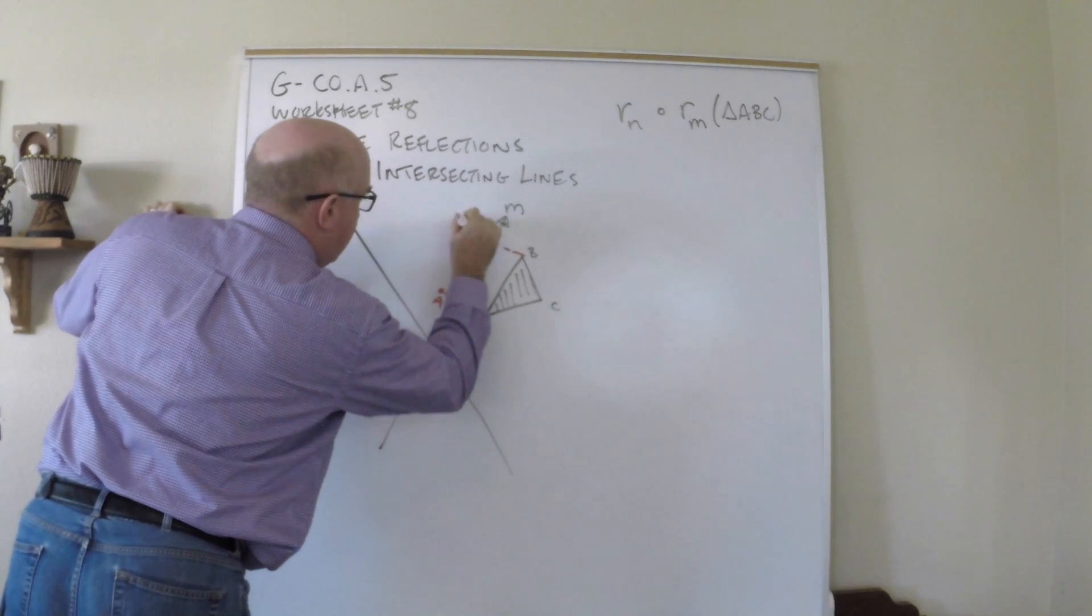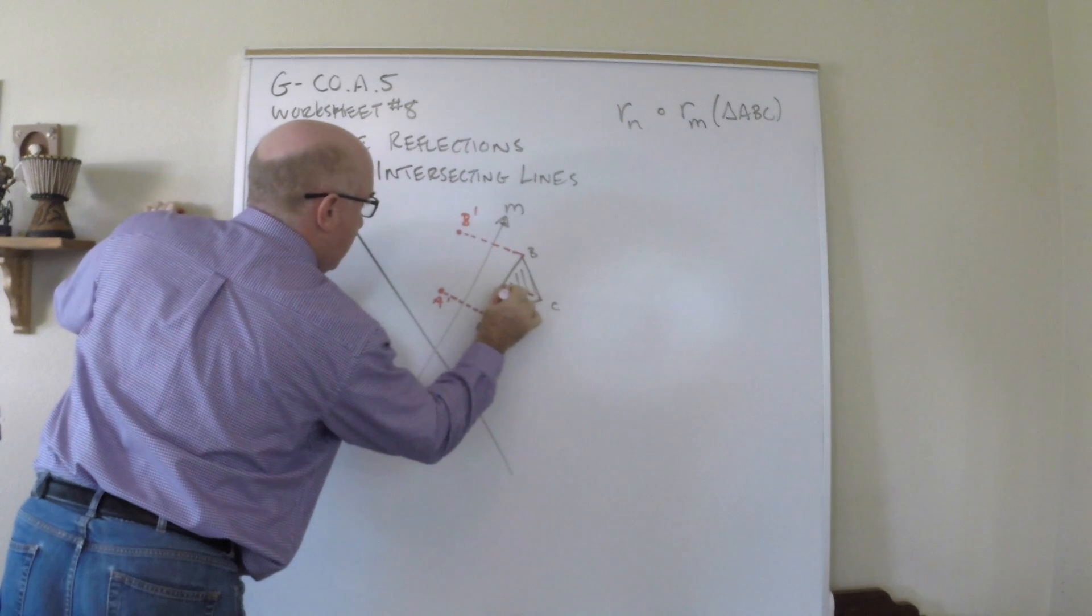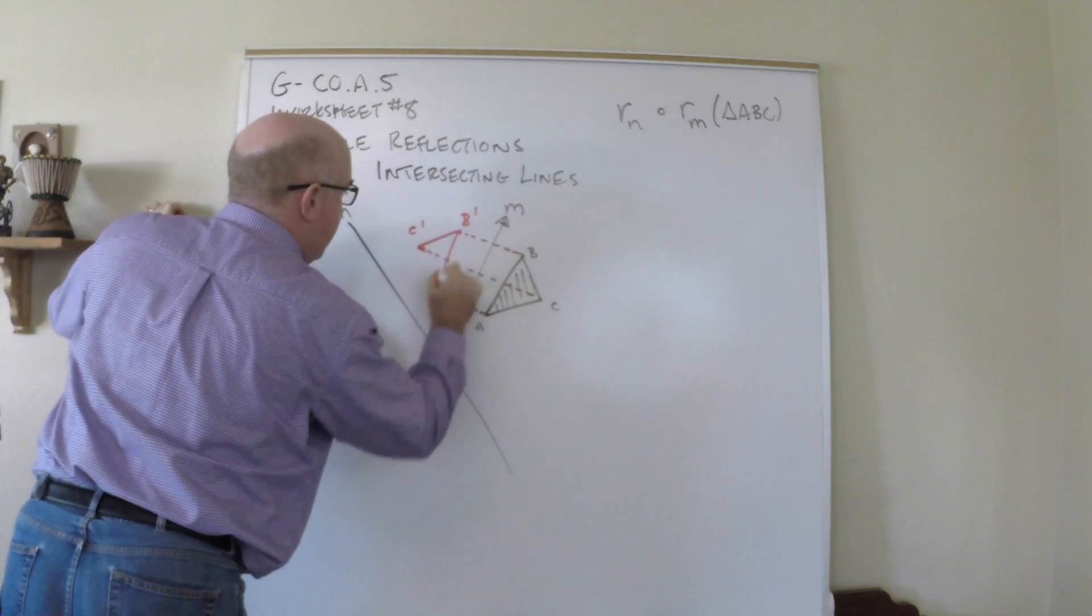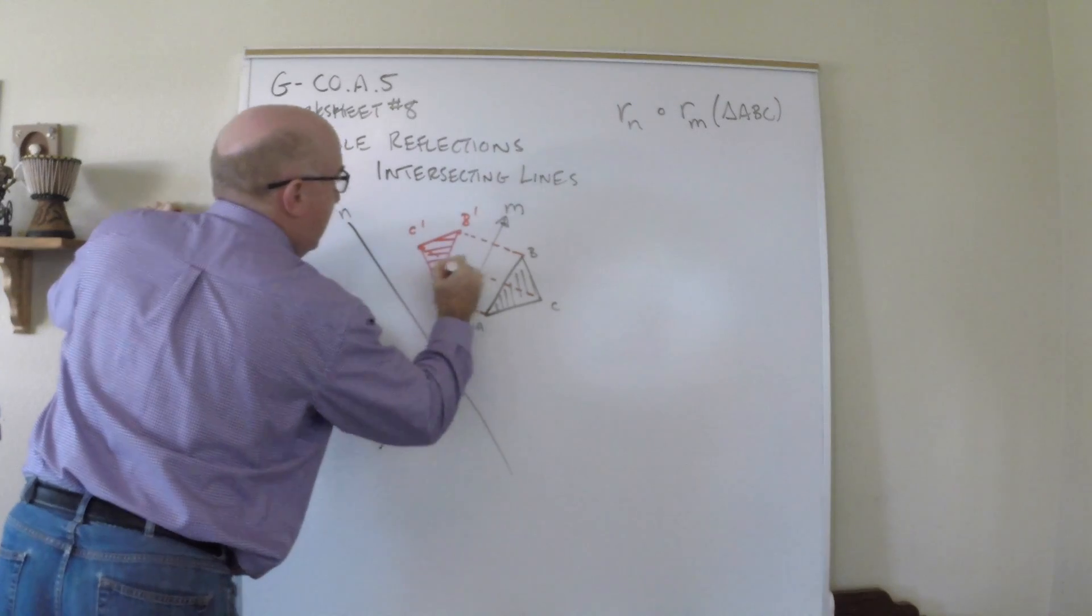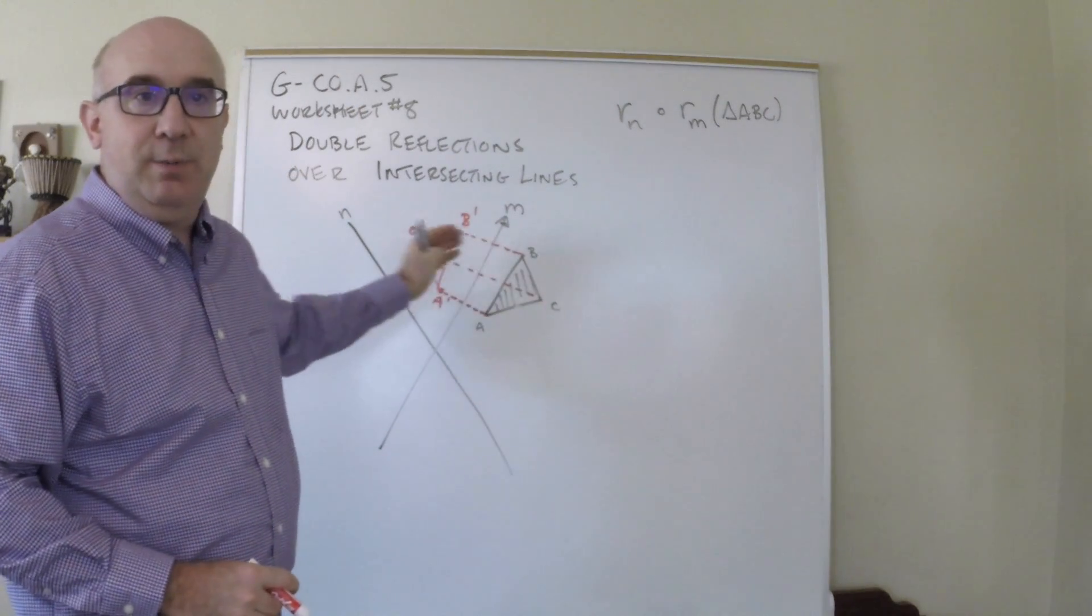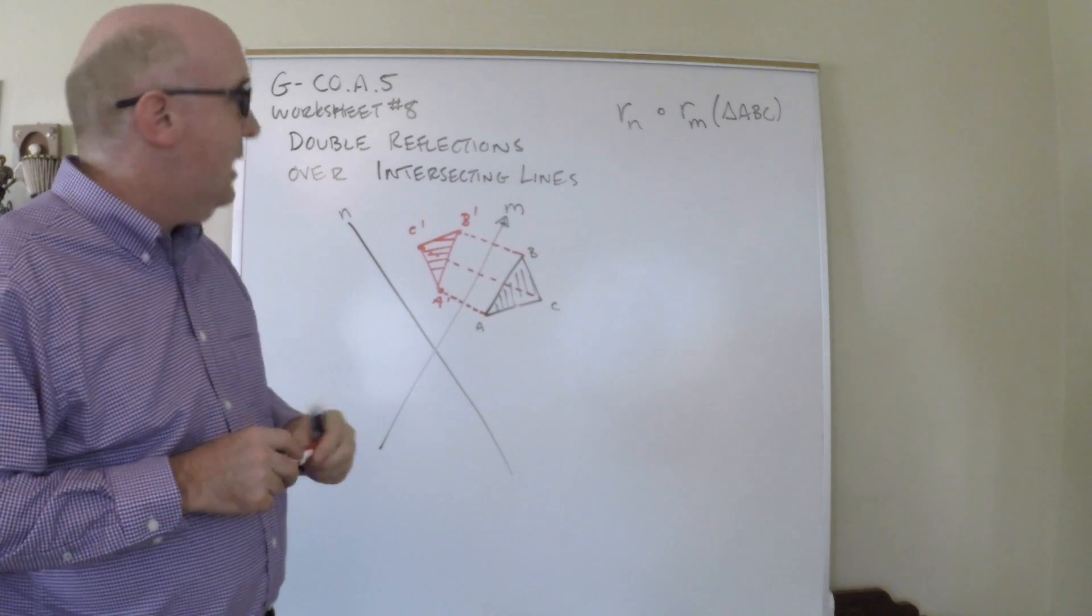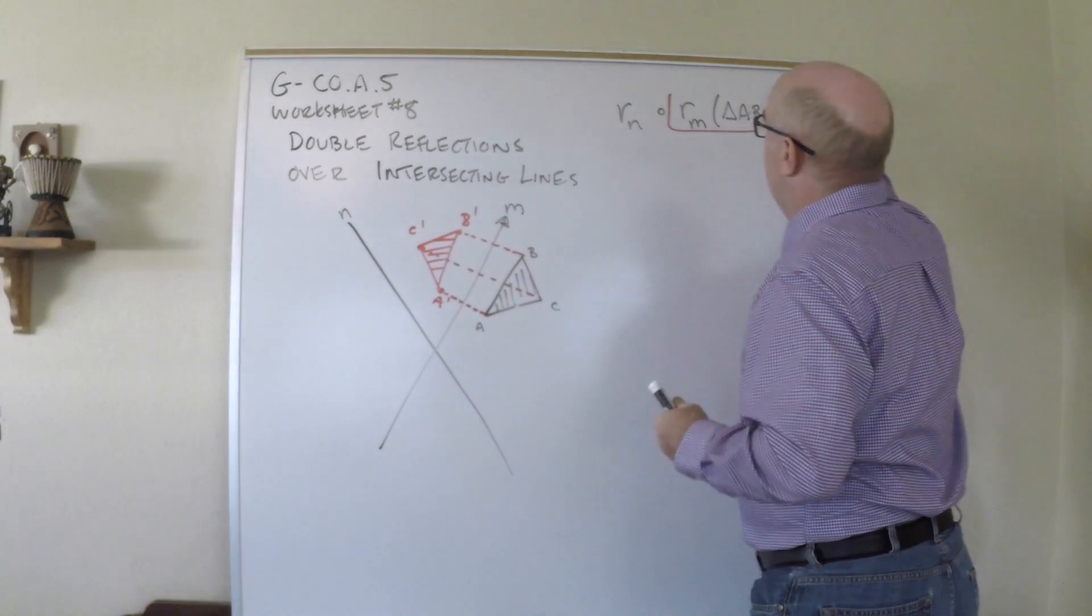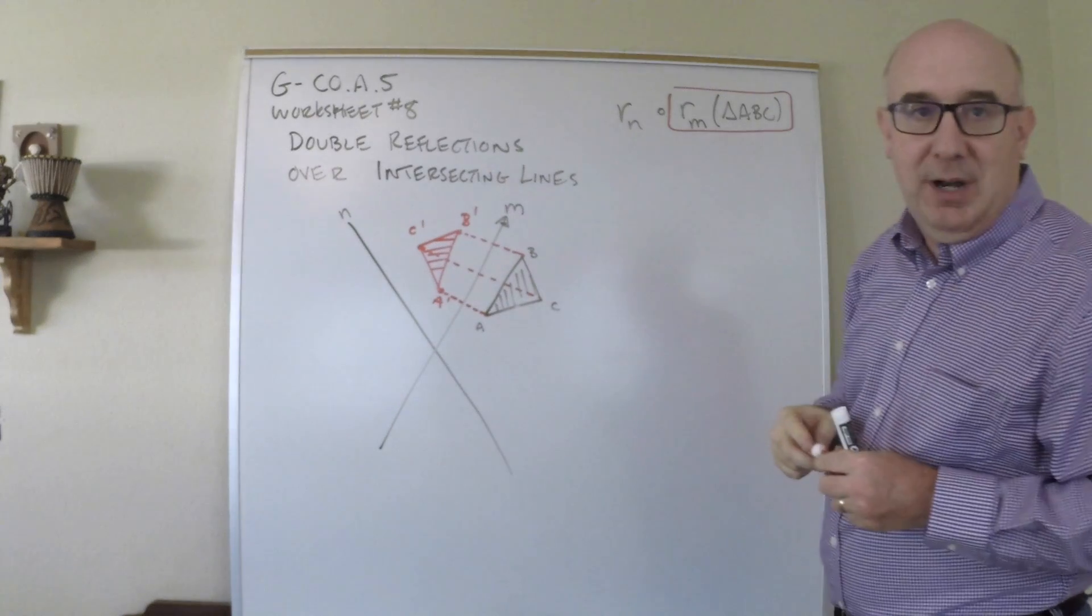We're going to kind of rough it in a little bit. You'll be able to see my work here. I'm using the concept of the parallel motion here, the perpendicular to this line here, and then we reflect it into position. That would be the first reflection here over M, giving us A prime, B prime, C prime.